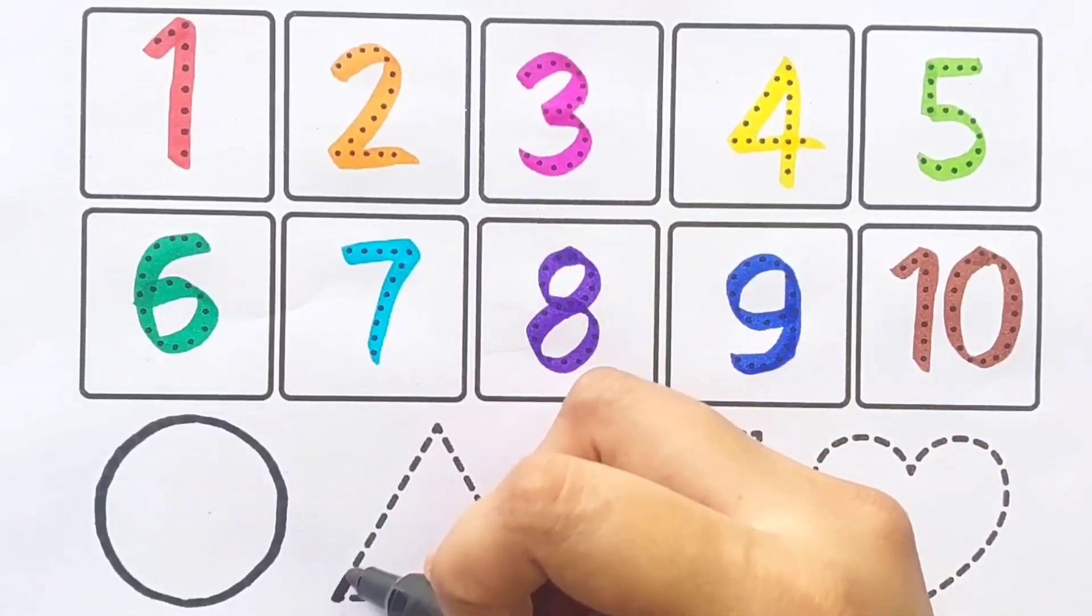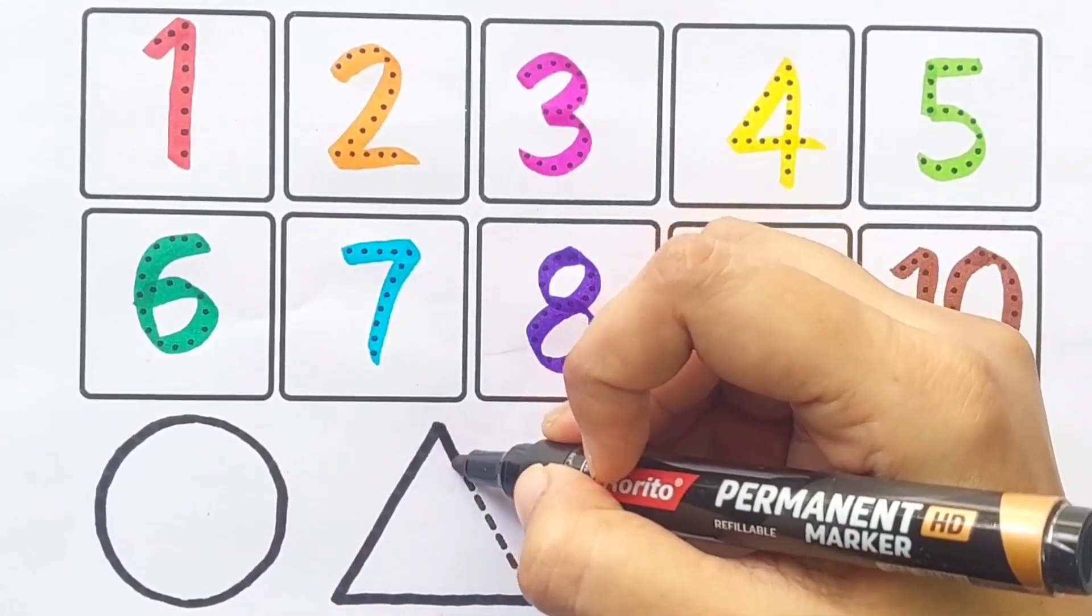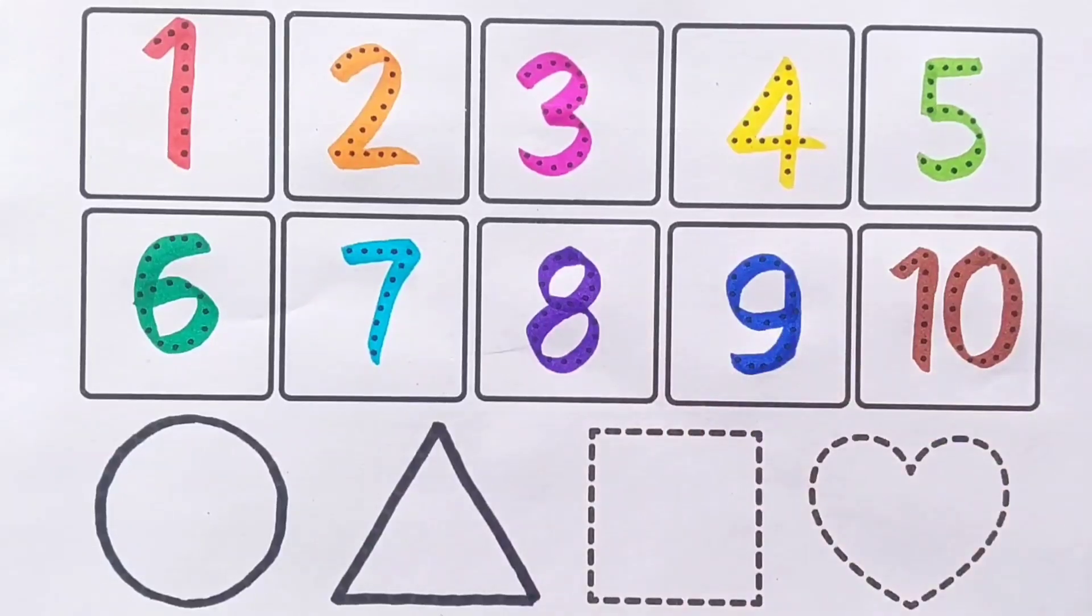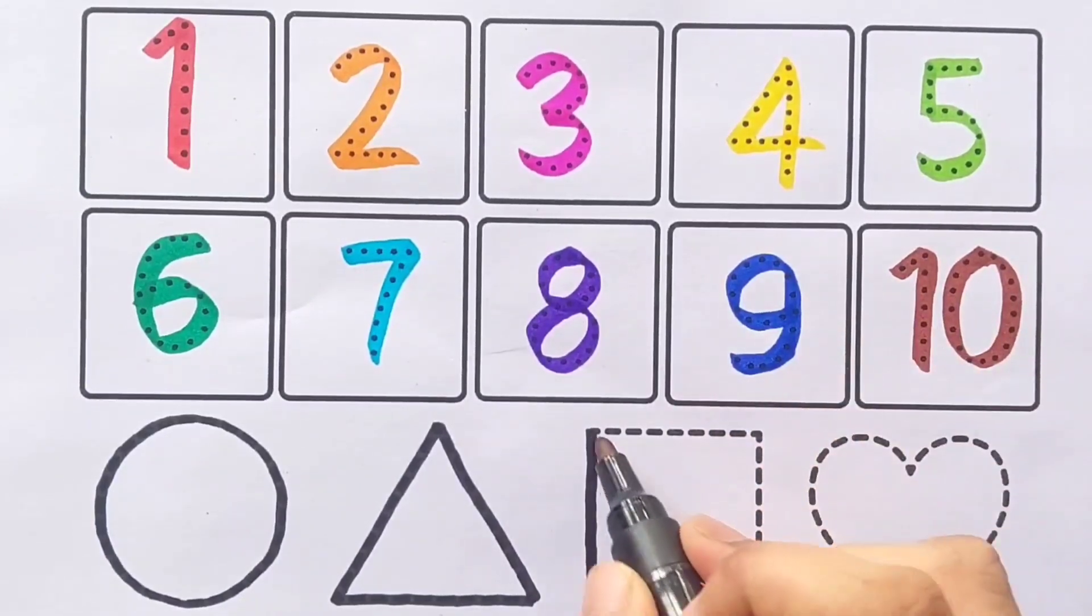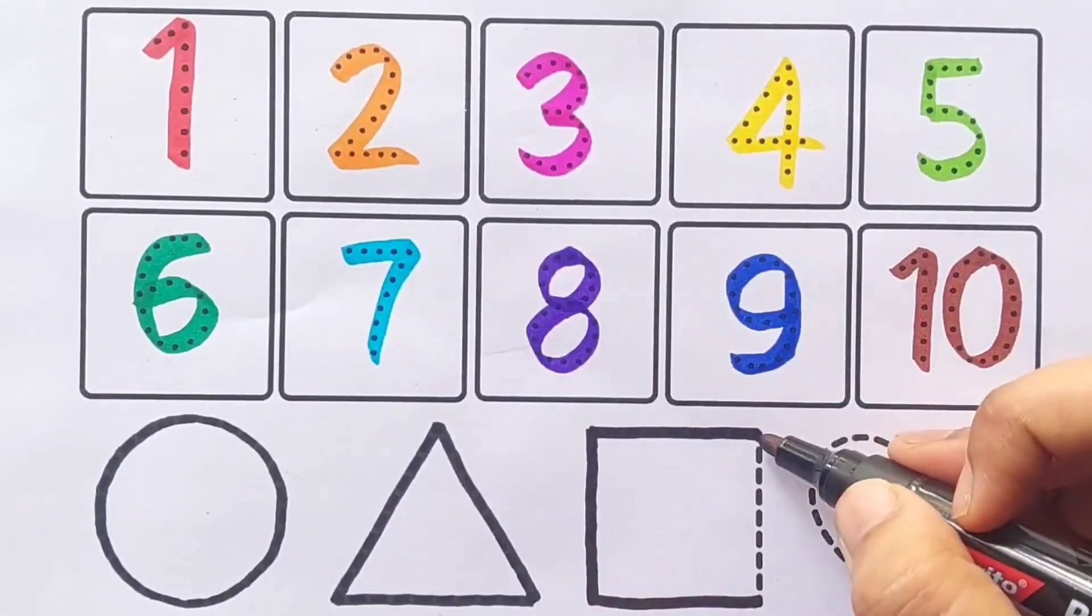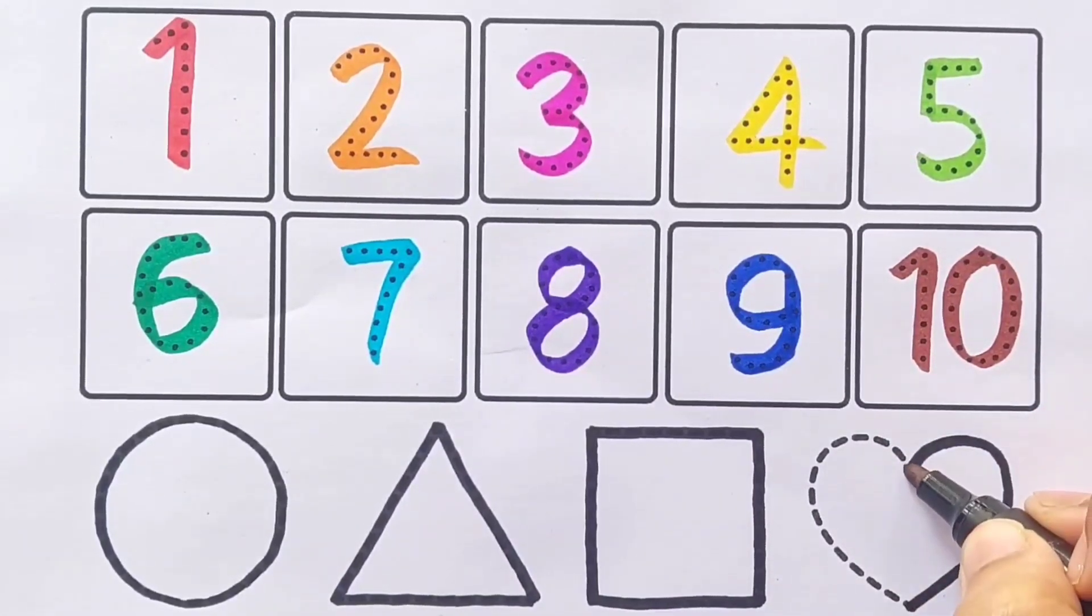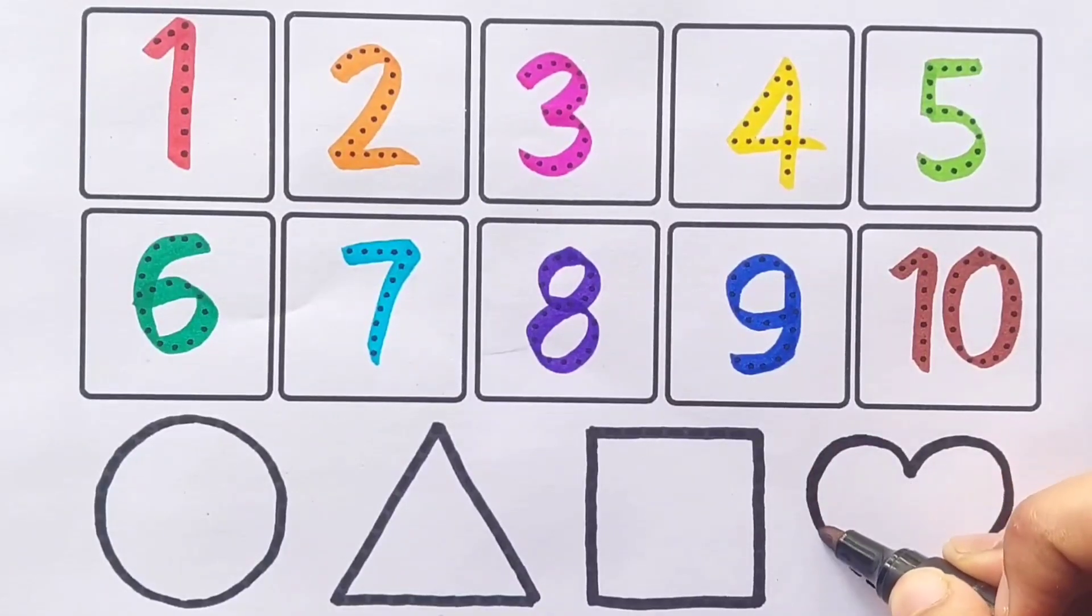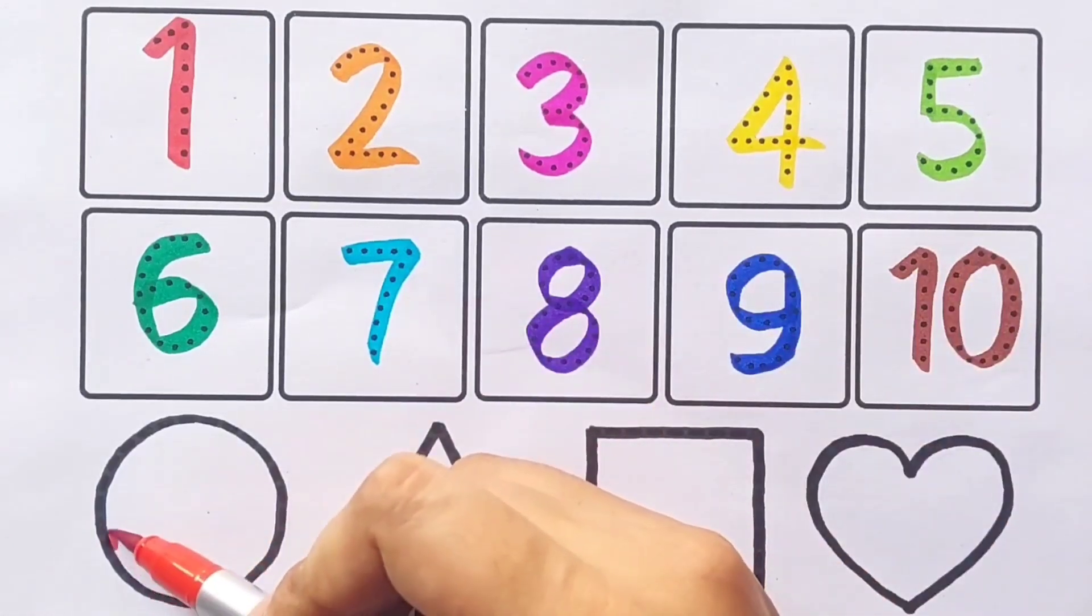Circle. Triangle. Square. Heart, red color.